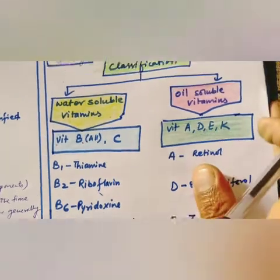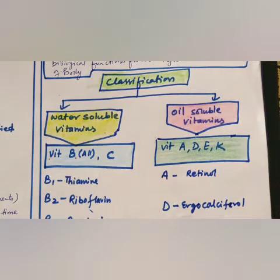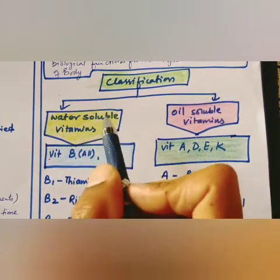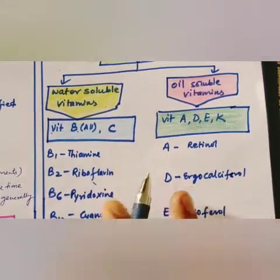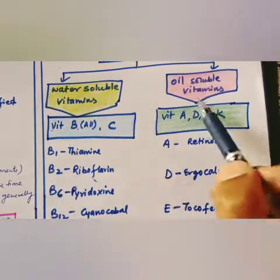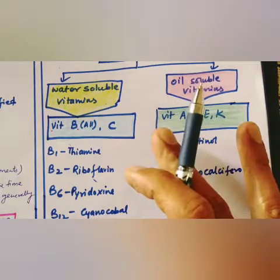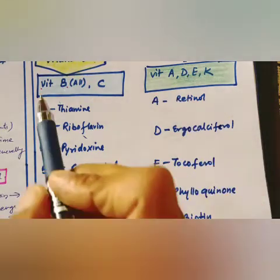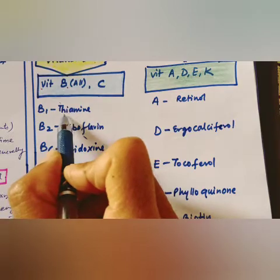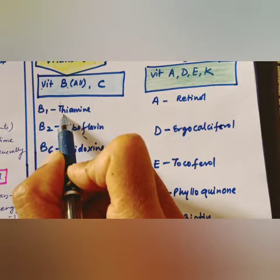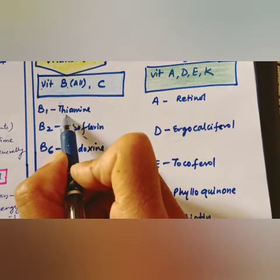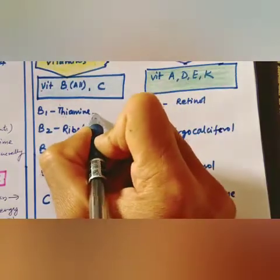Questions from this chapter commonly ask for chemical names of vitamins. Vitamin B1 is chemically named thiamine. Its sources include milk, rice, yeast, nuts, eggs, green vegetables, liver, and kidneys. Deficiency of vitamin B1 causes beriberi — symptoms include loss of appetite, retarded growth, and disease of the nervous system.